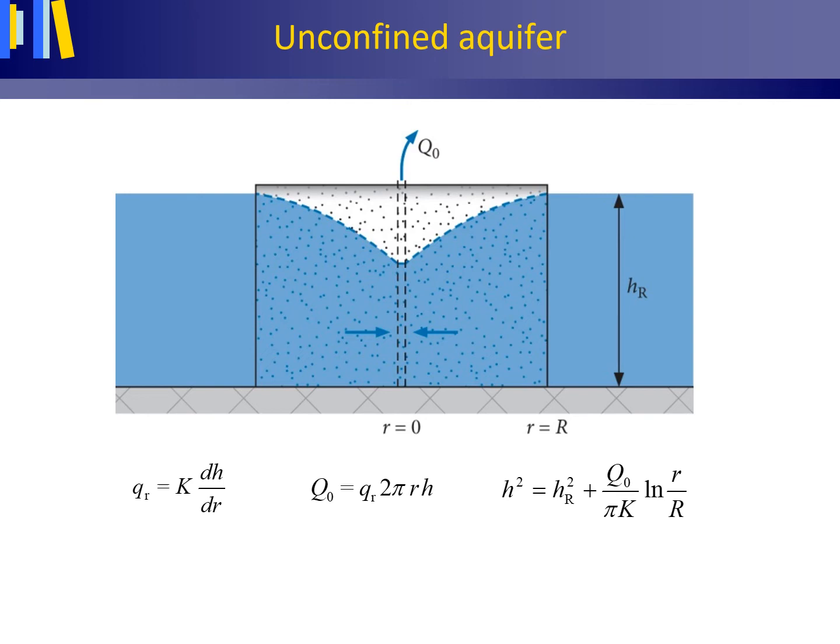This figure again shows radial symmetric steady groundwater flow to a fully penetrating pumping well, but now in an unconfined aquifer.